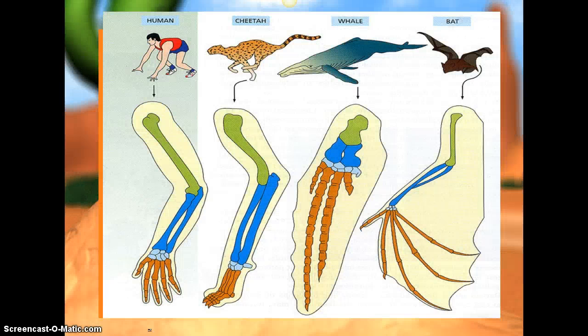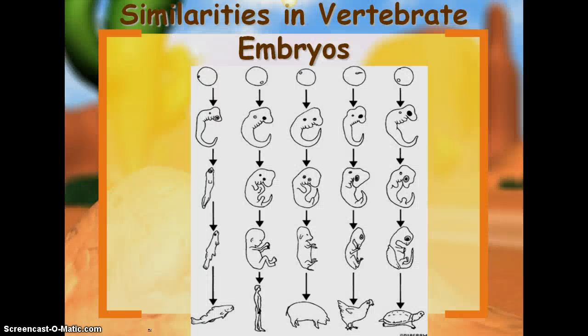Here are homologous structures as an example — their bone structures are there, but they're using them with different function. And here are embryo similarities.